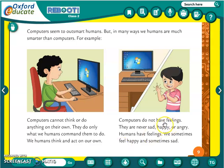The second thing: computers do not have feelings — they are never sad, happy, or angry. Humans have feelings; we sometimes feel happy and sometimes sad. We think and we have feelings. Feelings means you sometimes get angry, sometimes very happy. For example, if your parents give you a surprise gift, then you get very happy. If your parents say something you don't like, then you get angry.